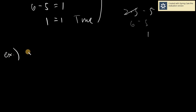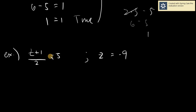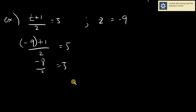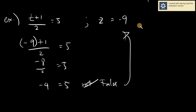Lastly, we have Z plus 1 over 2 equals 5, and Z equals negative 9. Let's check: negative 9 plus 1 over 2 equals 5. Negative 9 plus 1 is negative 8 over 2, which equals negative 4. Negative 4 is definitely not equal to 5, so this is false. Therefore, this is not a solution.